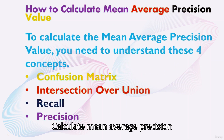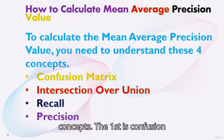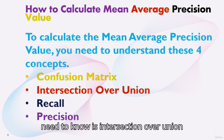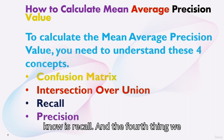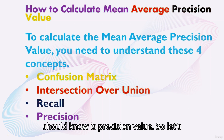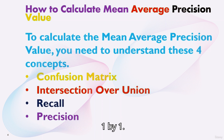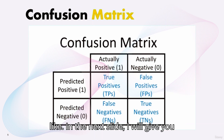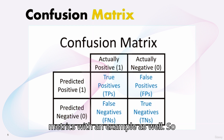To calculate the mean average precision value, we need to understand four concepts. The first is confusion matrix. The second is intersection over union, or IOU. The third is recall, and the fourth is precision value. Let's explore each of these four concepts one by one. This is how our confusion matrix looks like, and in the next slide I will give you a detailed explanation about confusion matrix with an example.